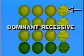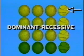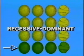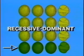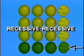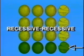Many seeds still showed both dominant traits. But some were yellow and wrinkled — dominant for seed color and recessive for seed shape. Some were green and smooth — recessive for seed color and dominant for seed shape. And a few were green and wrinkled, recessive for both seed color and seed shape.